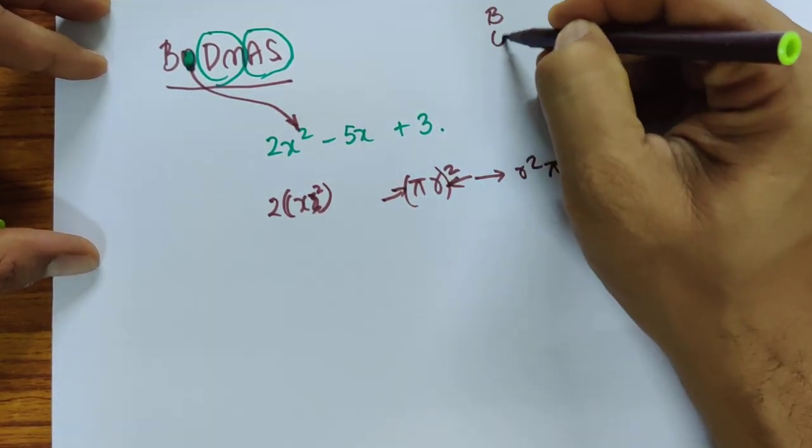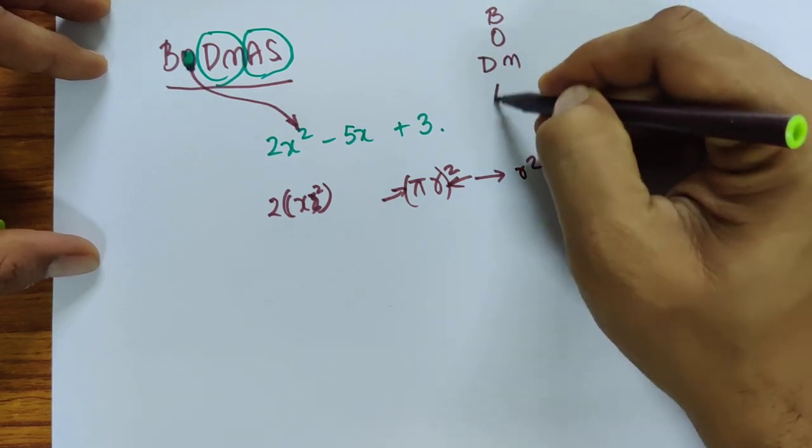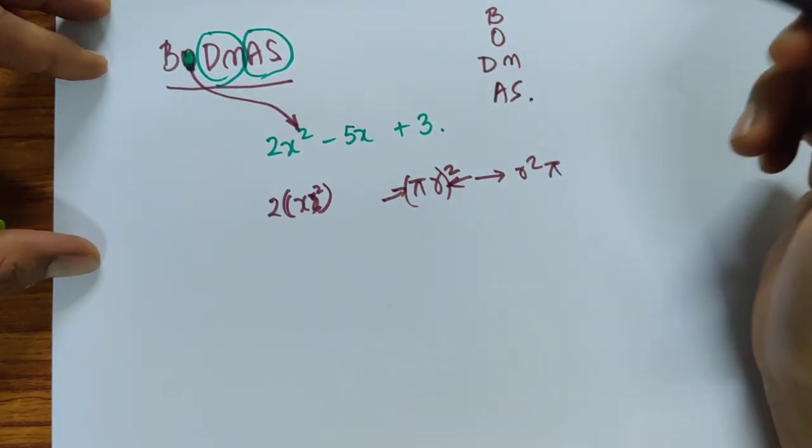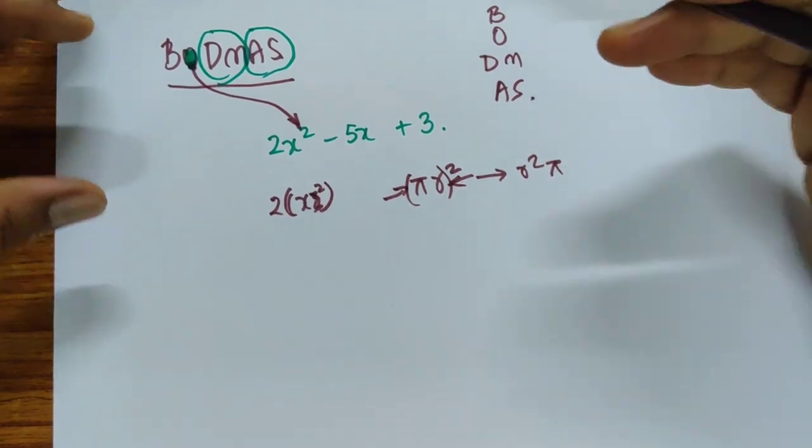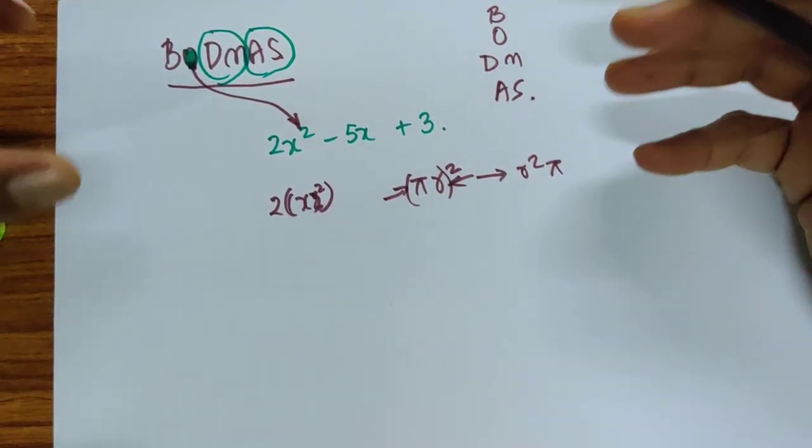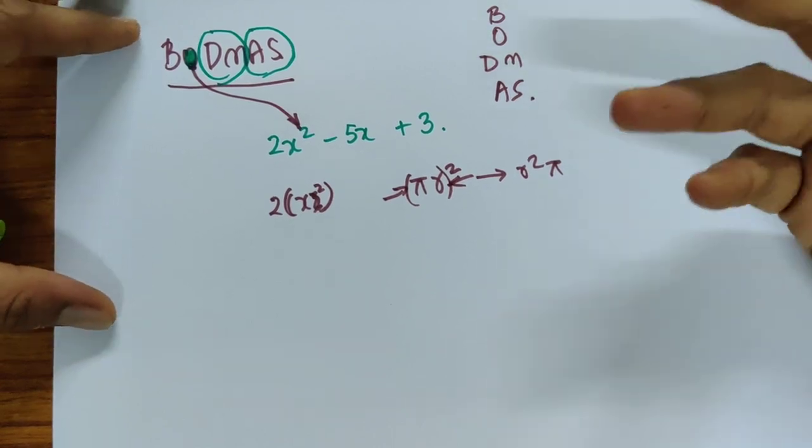Then the next is order, then you have the division multiplication and addition subtraction. So this is some of the logic behind why there are these conventions.